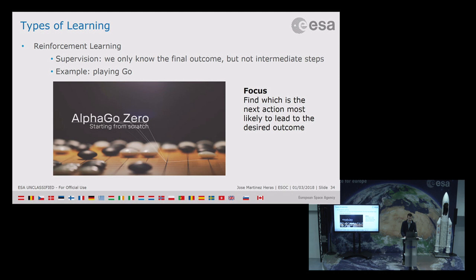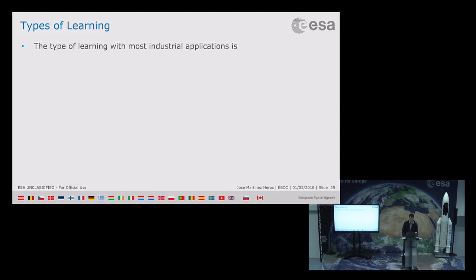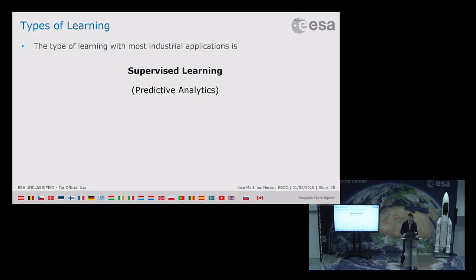For reinforcement learning, the supervision is that we only know the final outcome — for instance, when playing Go or chess, we know if you won or lost, but we cannot tell which steps led to victory or loss. The focus is to find which next action is most likely to lead to winning. The type of learning most used in industry is supervised learning — some people call it predictive analytics — predicting what you will buy, which advertisement you will click, or how much a house will sell for.